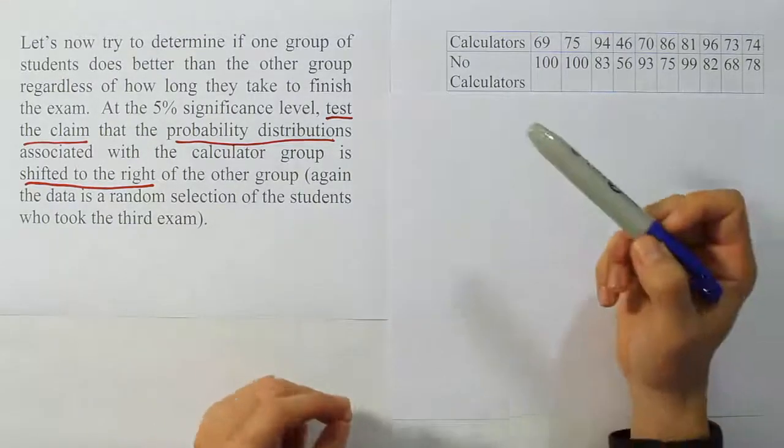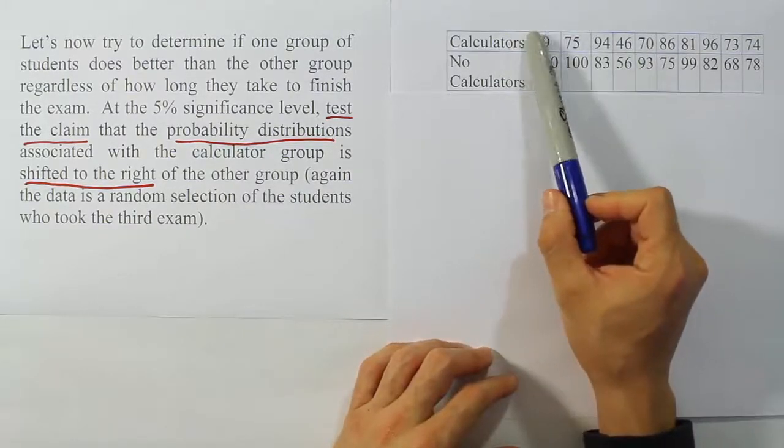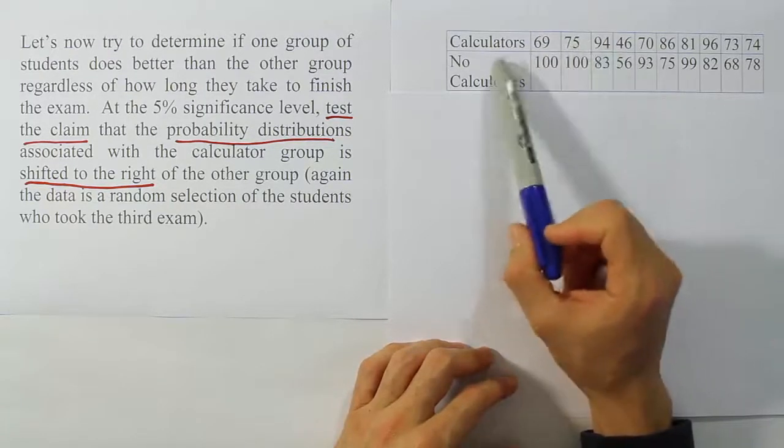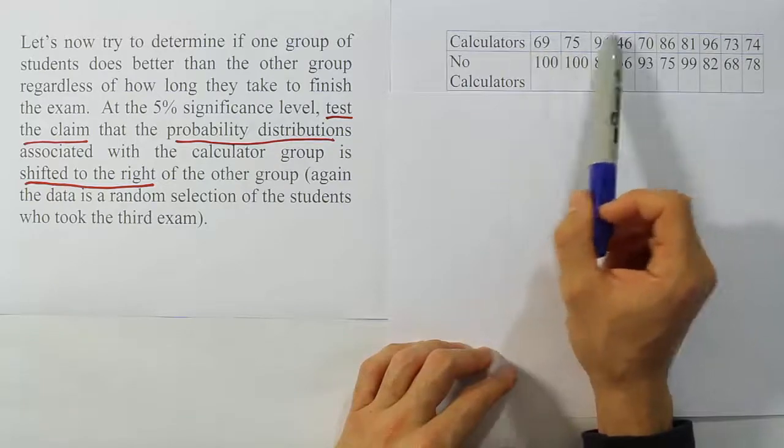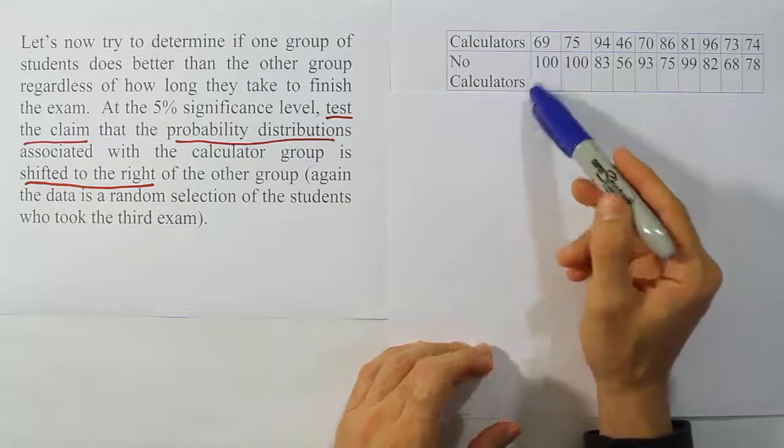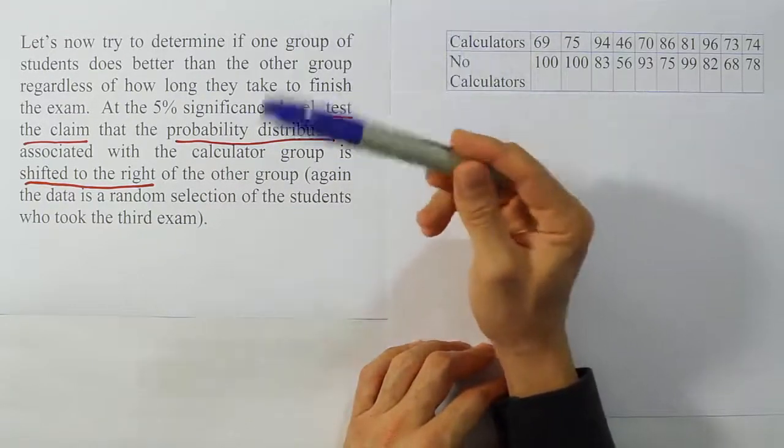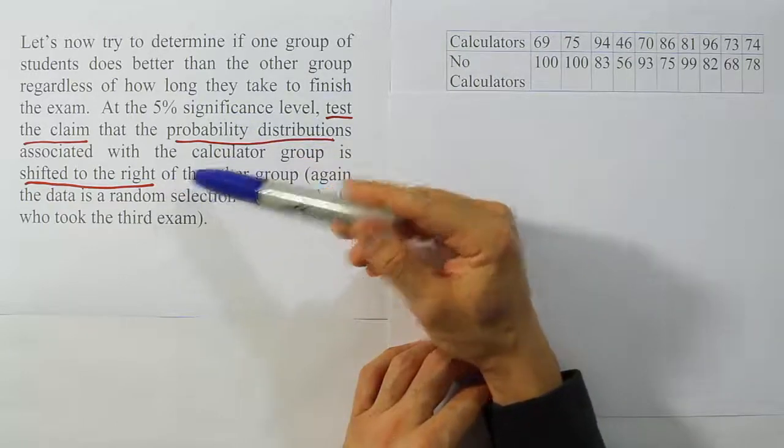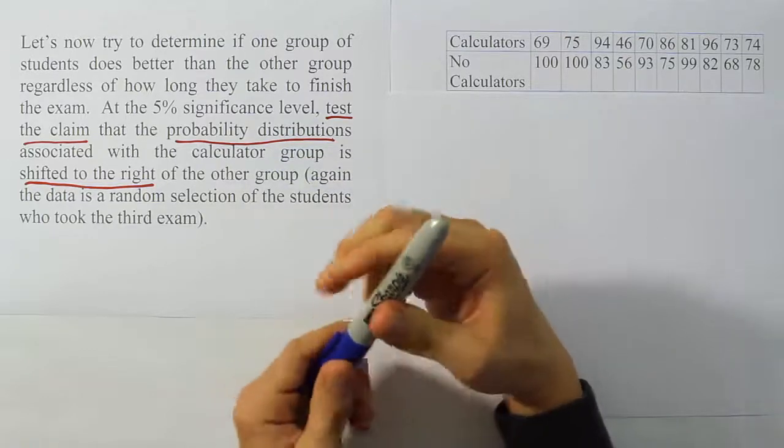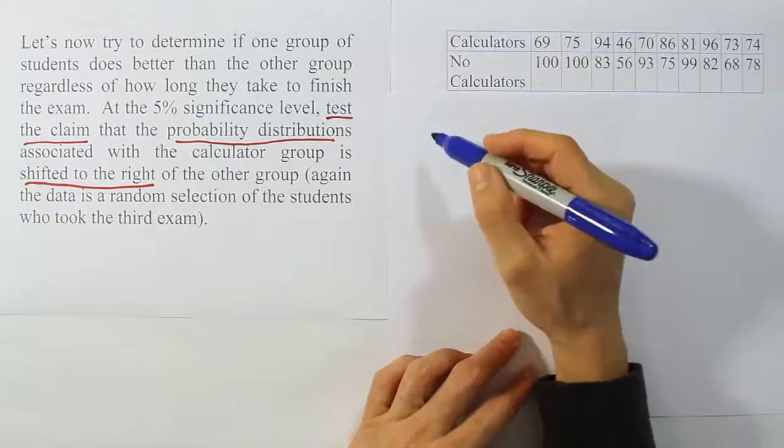Alright, so let's go ahead and run that test. And when I look at the data, and based on our description of the data, we know that these are independent samples because either the person used the calculator or they didn't. There's no overlap in the groups, there's no dependency in the groups. So the calculator group and the no calculator group are independent groups. There are independent samples drawn from those groups. And now what we're going to do is run the Wilcoxon rank sum procedure.